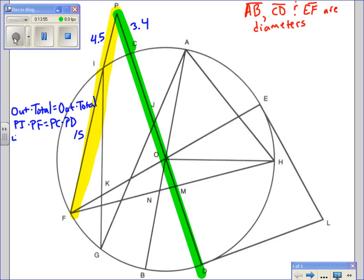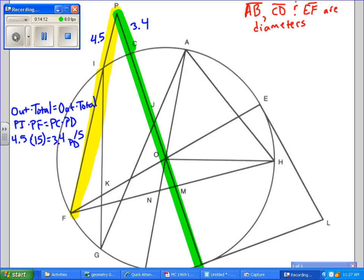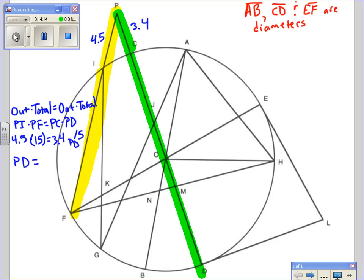And if we plug in the numbers that we know, PI is 4.5, PF is a total of 15, PC is 3.4, and PD we don't know yet. So if we solve for PD, we should get a total of PD is equal to 19.8529 dot dot dot, which if we follow the directions, it says to round to the nearest whole number when appropriate, so PD we're going to let it be 20.